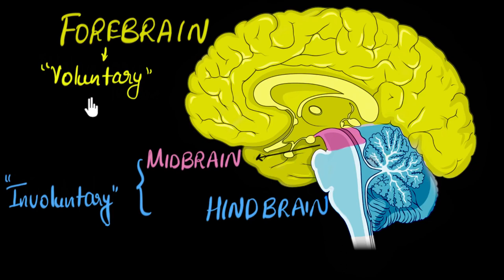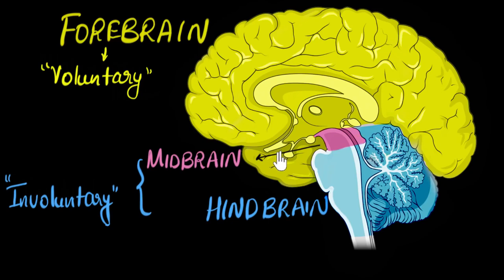So how do we remember which part does which? The way I like to think about it is: what makes humans special is their big brain — their big forebrain. We have this amazing intellectual ability, our intelligence. So the forebrain gives us our intelligence — it's why I can do all my thinking, make decisions, and also walk and talk. That's how I remember that the forebrain controls voluntary actions.